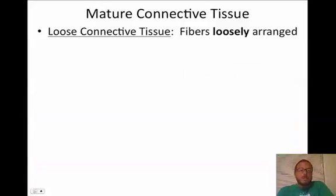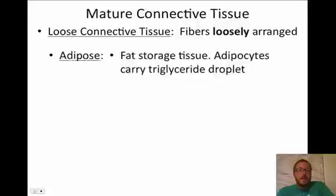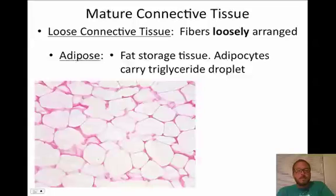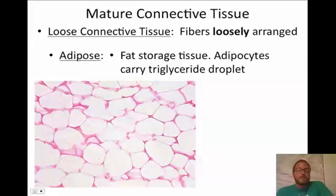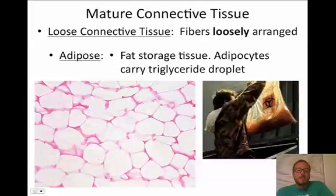The next loose connective tissue type is adipose tissue — fat storage tissue. Adipocytes, the mature fat cells, carry a triglyceride droplet. It's easy to recognize: it looks like flagstones. The big white area inside is the triglyceride and the nuclei are crammed off to the sides. Adipose tissue is simply fat — it's energy storage.